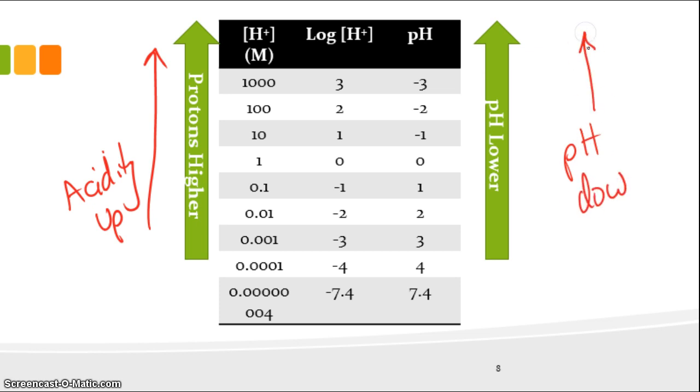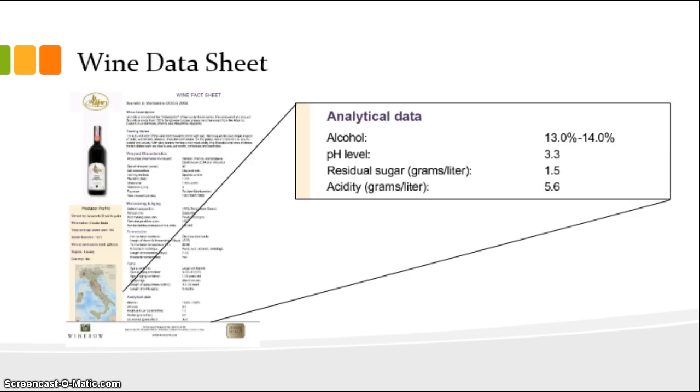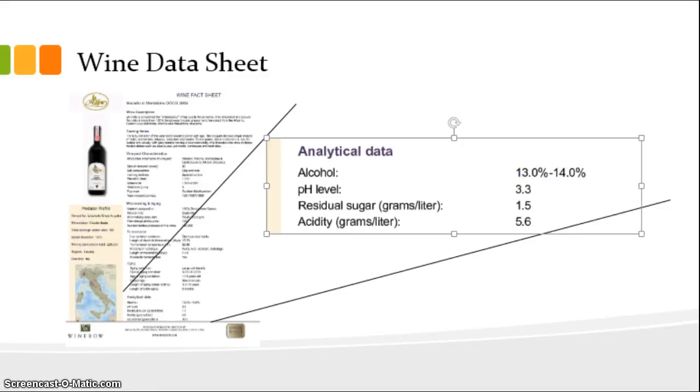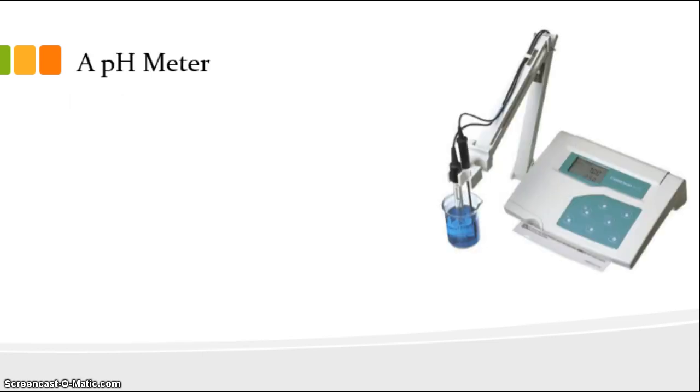Where do we see this in wine? If you looked at a wine data sheet, you'll often see something that looks like this: the pH level is 3.3, acidity is 5.6 - that's our titratable acidity we'll talk about next time. But there's our pH, 3.3. We often test pH with a pH meter, and we'll do that in class. It looks something like this. Hopefully that helps clarify what pH is all about. We'll talk more when we discuss titratable acidity next week. Thank you for listening.